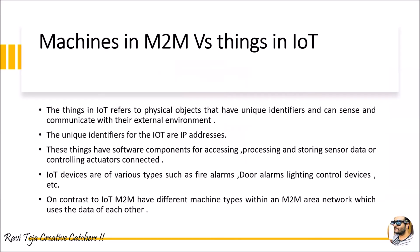Next, let's compare machines in M2M versus things in IoT. Things in IoT refers to physical objects with unique identifiers that can sense and communicate with their external environment. These can be sensors connected to a controller or processor. IoT devices use IP addresses as unique identifiers to access data. These things have software components for accessing, processing, and storing sensor data, and can also control connected actuators.